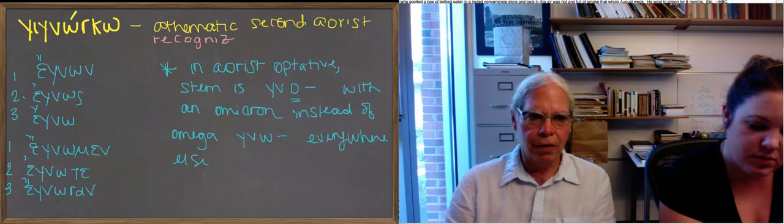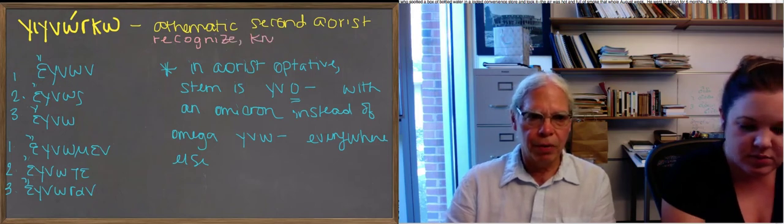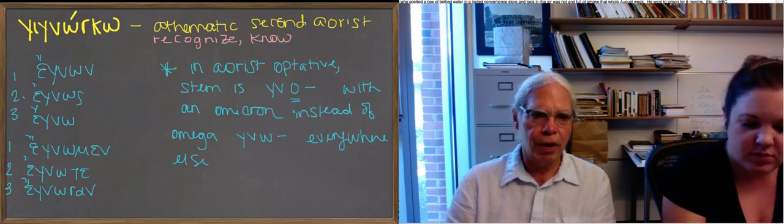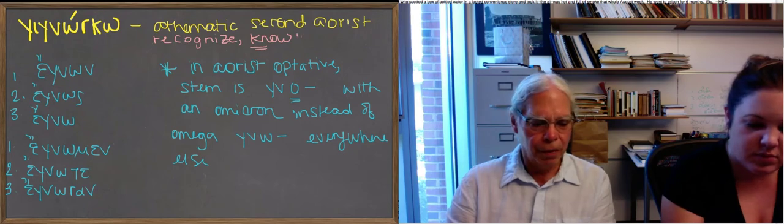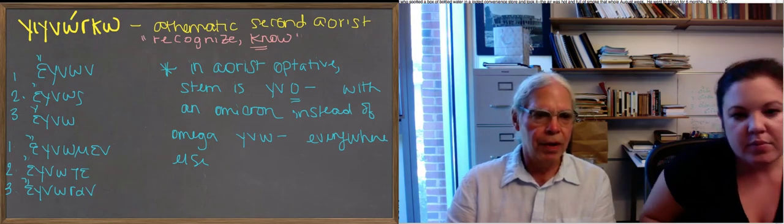which is the same as the English root kno, with a k, the original gamma turns into a k in English. So it means know, recognize, all those kinds of things, perceive, understand.